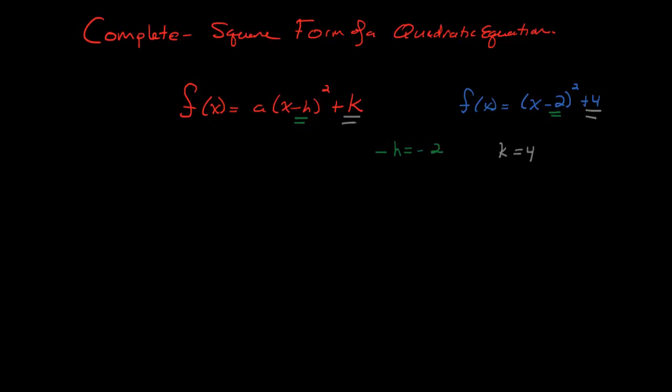And then further, we had this value of a. And a, even though we did not see it, was equal to a value of 1. So we're going to learn a lot of characteristics about this complete square form because it tells us a lot.